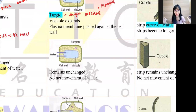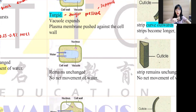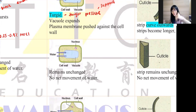Isotonic means equal. Remember, we don't write 'no movement' — we write 'no net movement of water,' which means water diffuses in and diffuses out at the same rate.